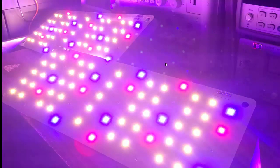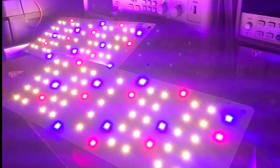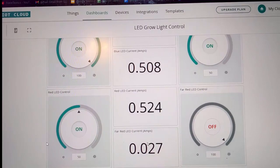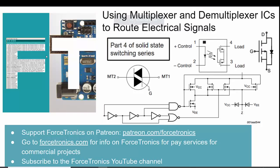Here are my LED boards that are on — in person it's a lot brighter than it looks on video. That's an example application for an analog MUX. That's it for using multiplexer and demultiplexer ICs to route electrical signals, and this concludes the four-part series on solid-state switching. If you have any questions or want to add something, please leave them in the comment section. If you want the exclusive content, please check it out on Patreon. Thank you for watching.